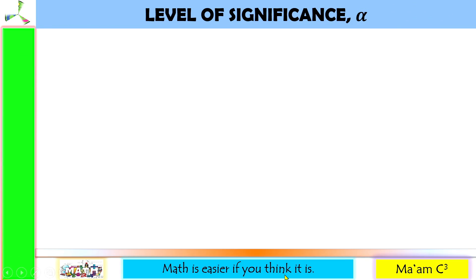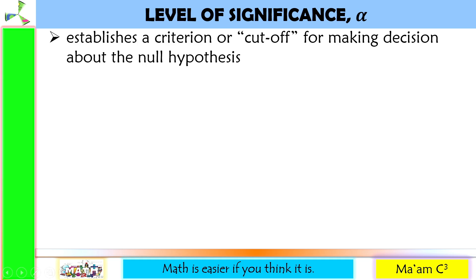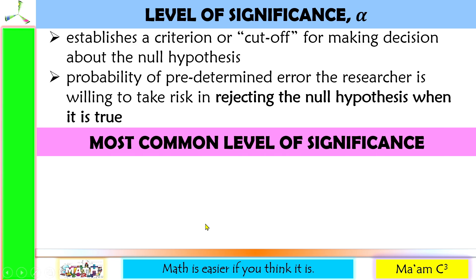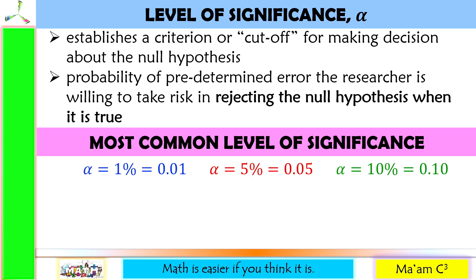Let us talk about level of significance, denoted by the symbol alpha. Level of significance establishes a criterion or cutoff for making a decision about the null hypothesis. It is the probability of a predetermined error the researcher is willing to take risk in rejecting the null hypothesis when it is true. There are three most common levels of significance: alpha equals 1% or 0.01, alpha equals 5% or 0.05, and alpha equals 10% or 0.10.